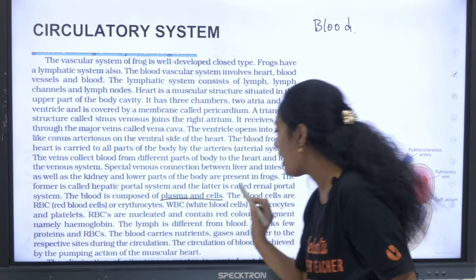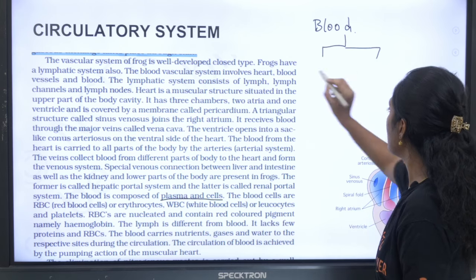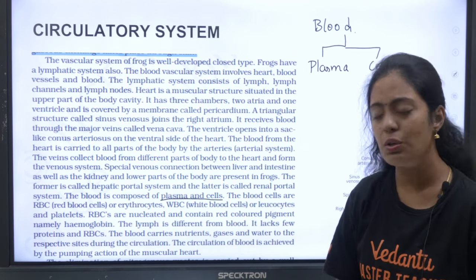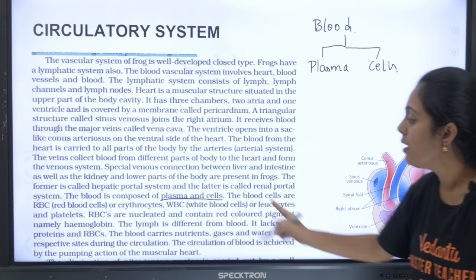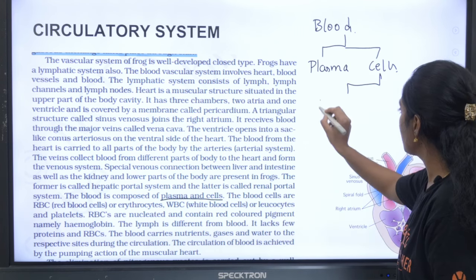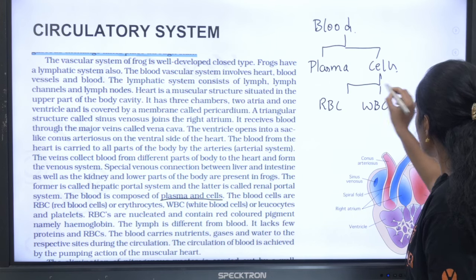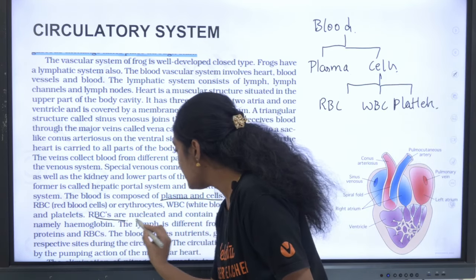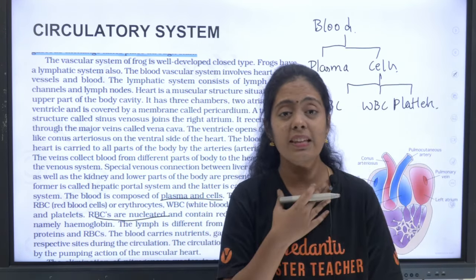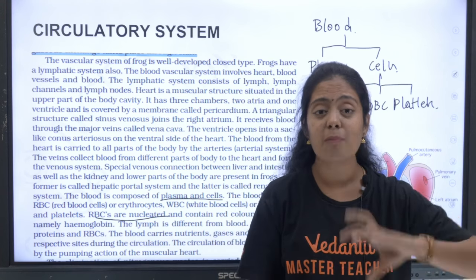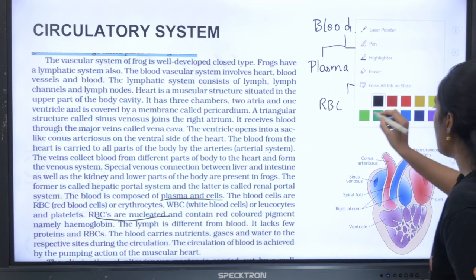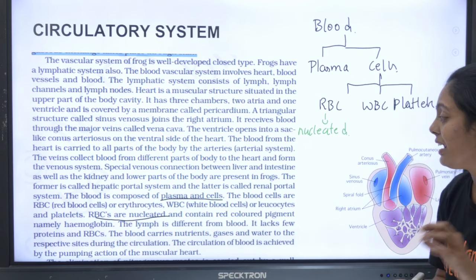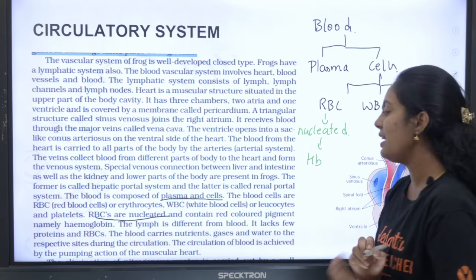The blood is composed of plasma and cells. Blood cells include RBCs, WBCs, and platelets. Importantly, RBCs in frogs are nucleated — unlike in mammals where RBCs are enucleated (no nucleus). RBCs contain the red colour pigment haemoglobin, which is why blood is red in colour.